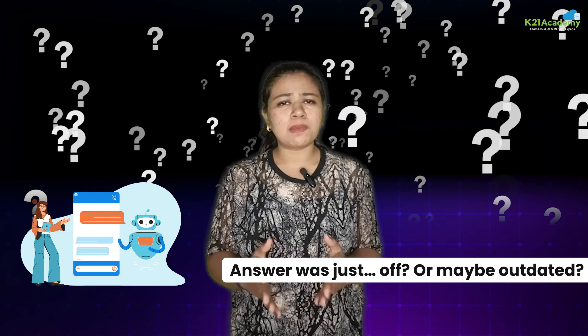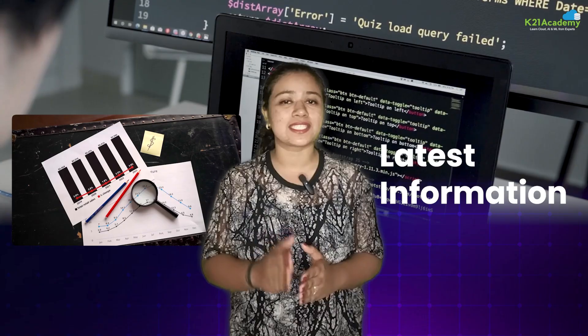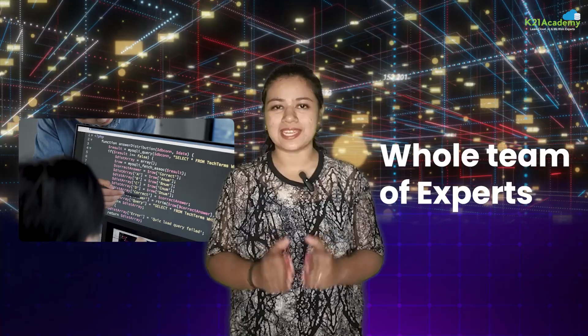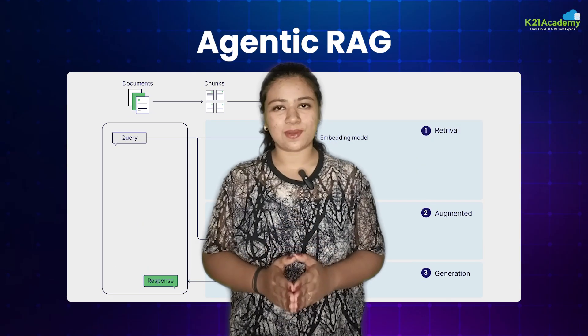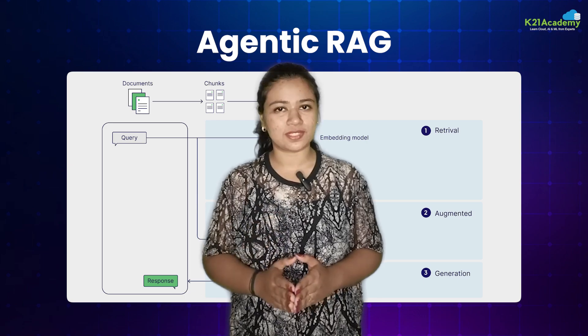Have you ever asked a chatbot something and felt like the answer was just off or maybe outdated? Even the smartest AI can miss the mark sometimes because it doesn't always have the latest information. But there's a cool way to fix that — a way that lets AI pull information from lots of places, kind of like having a whole team of experts ready to jump in and help. That's what Agentic RAG is all about — a next-level approach that's making AI way smarter and more useful.